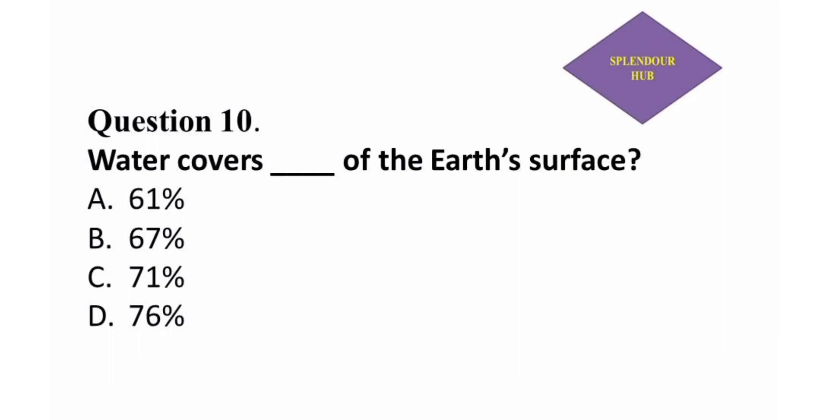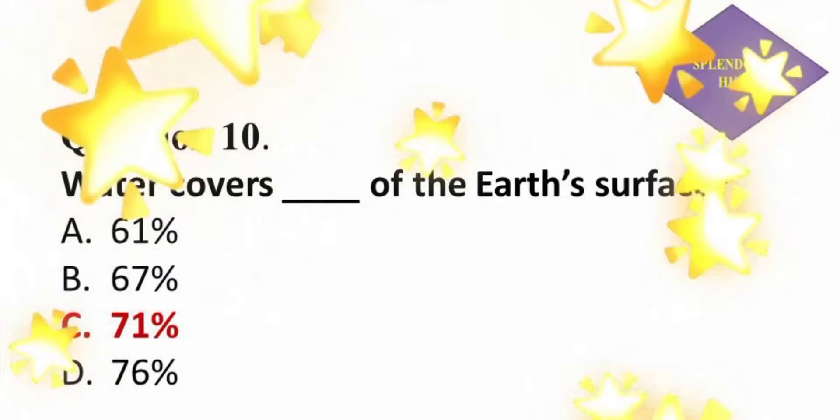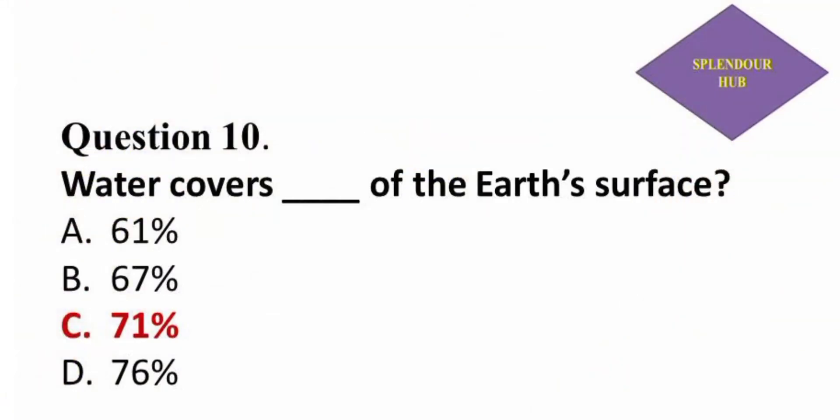Question 10: Water covers dash of the Earth's surface — option A: 61 percent, option B: 67 percent, option C: 71 percent, option D: 76 percent. Answer: Water covers 71 percent of the Earth's surface.